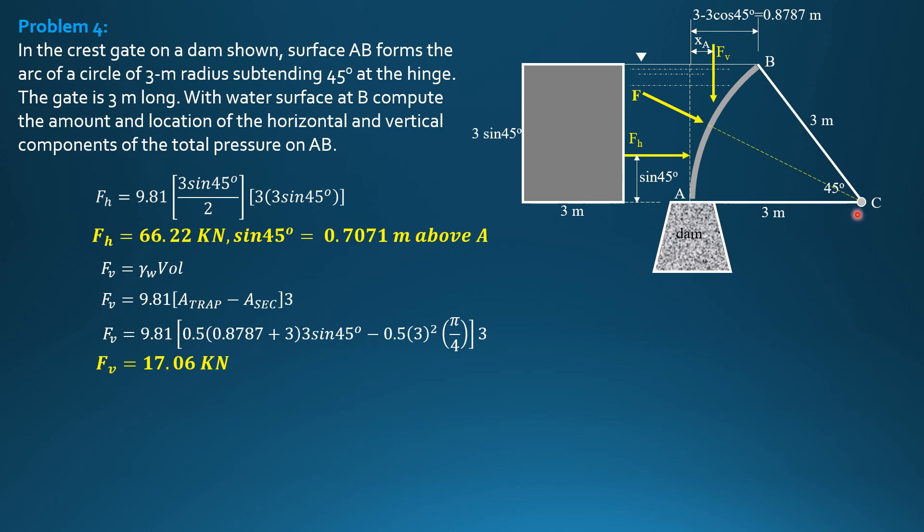Then moment of the resultant force about the center of the circular arc at C is 0. It passes through there. Therefore, it is equal to the sum of the moments of its components. So it is equal to 0. M_C equals 0 equals F_V, which is 17.06. The moment arm is 3 minus X_A. Then minus F_H, which is 66.22. The moment arm is sine 45 degrees or 0.7071.